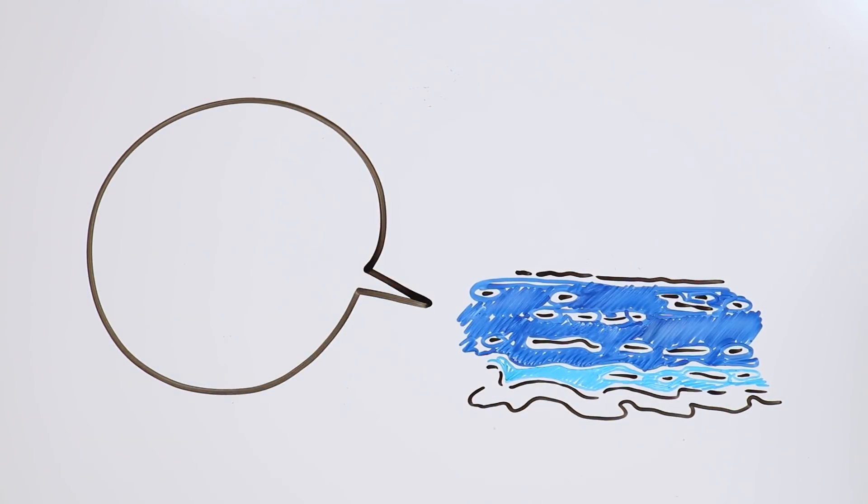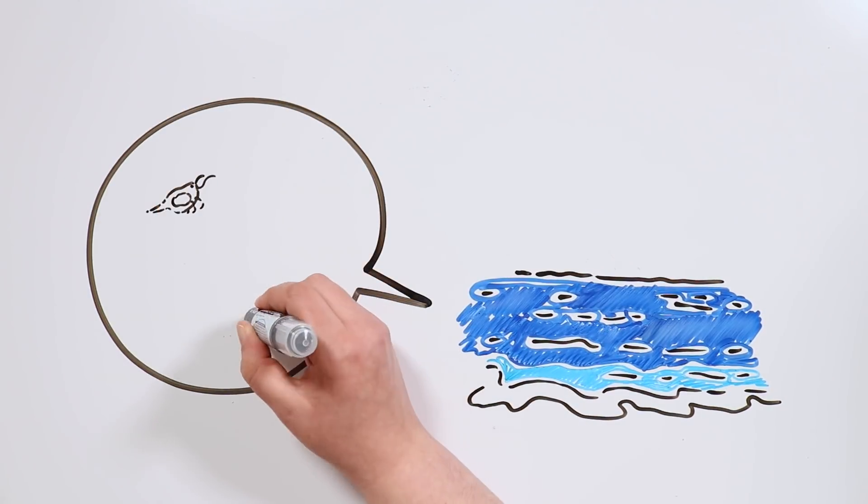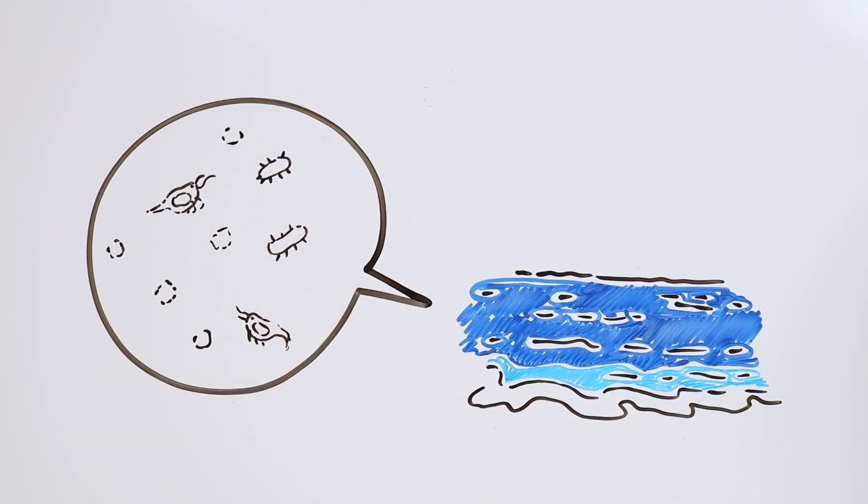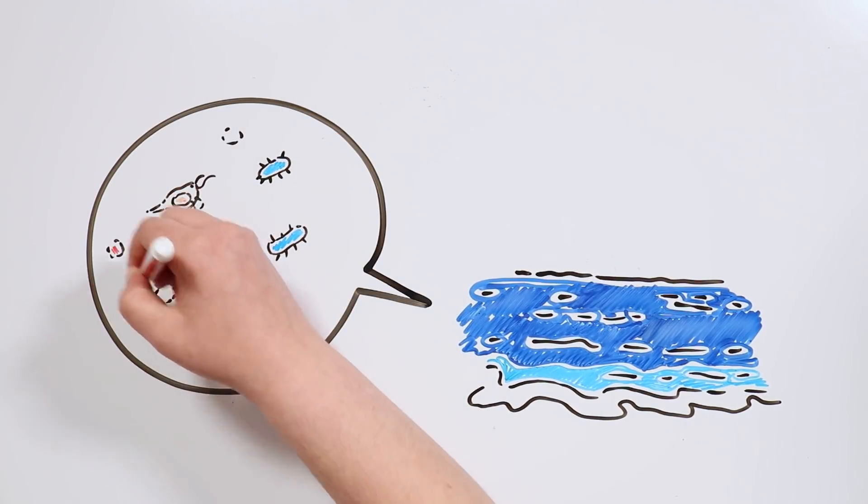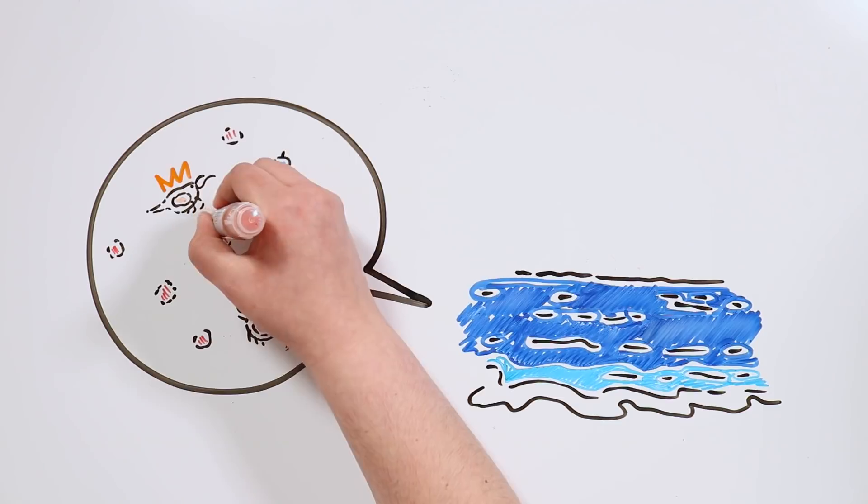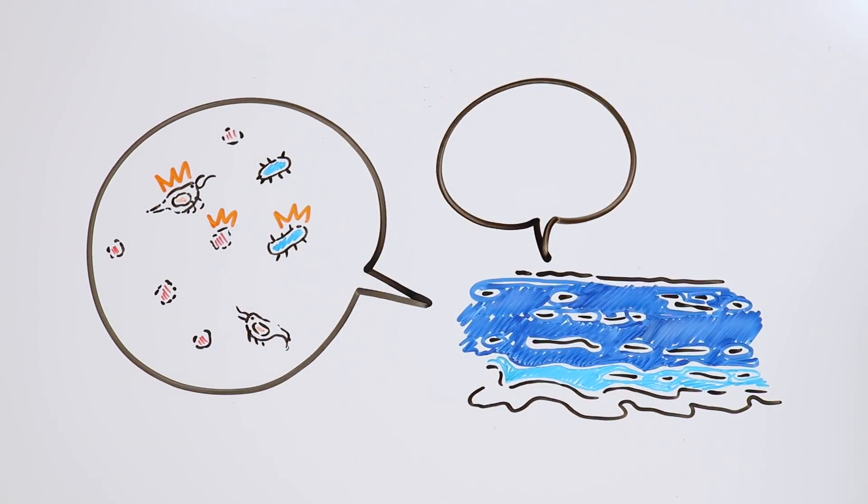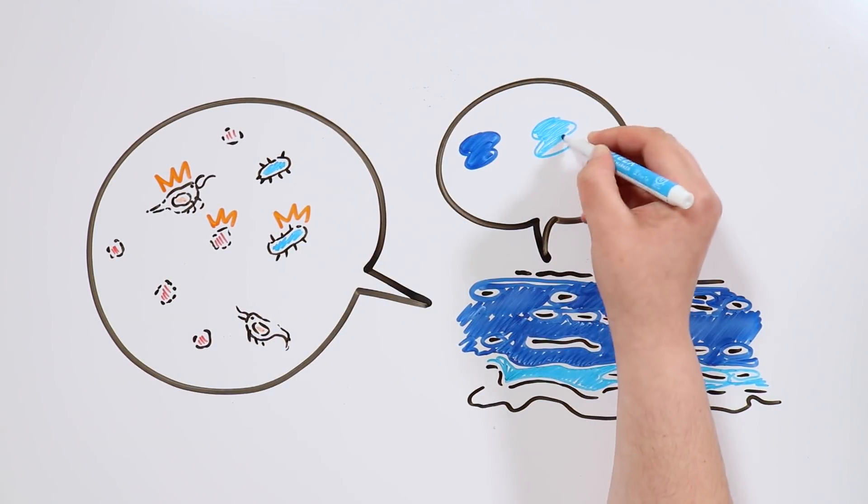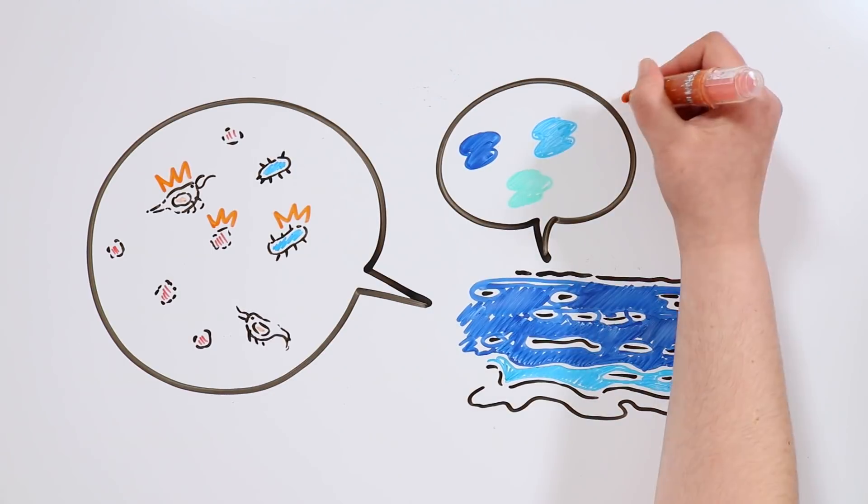We also have to take into account that seawater isn't pure. It contains a lot of different elements such as minerals, seaweed and microorganisms, which also absorb part of that light. That's why seawater can have different hues depending on the location.